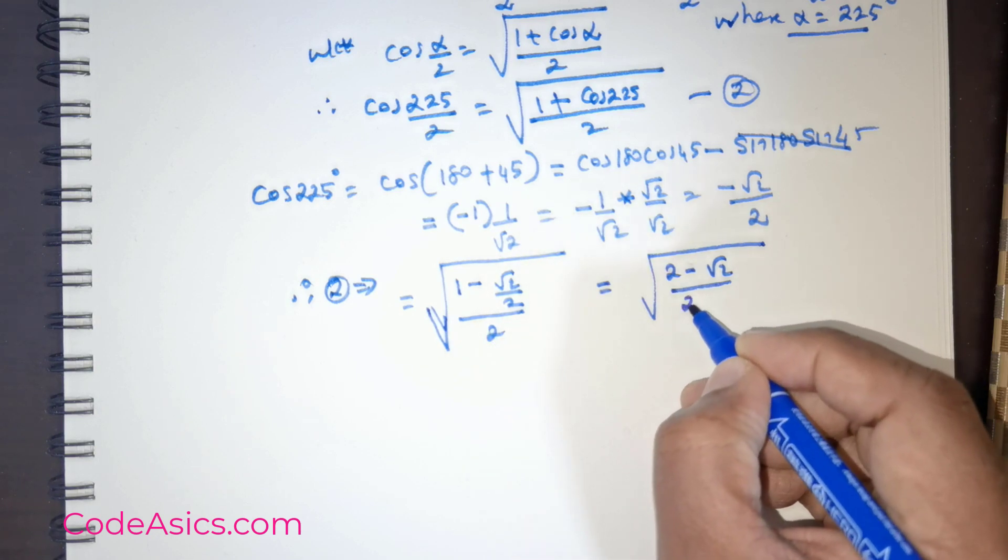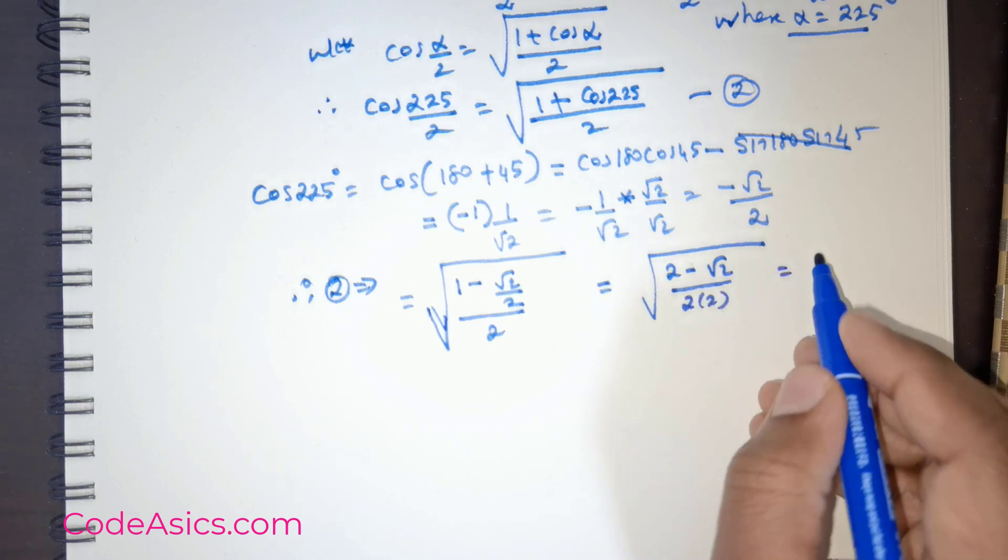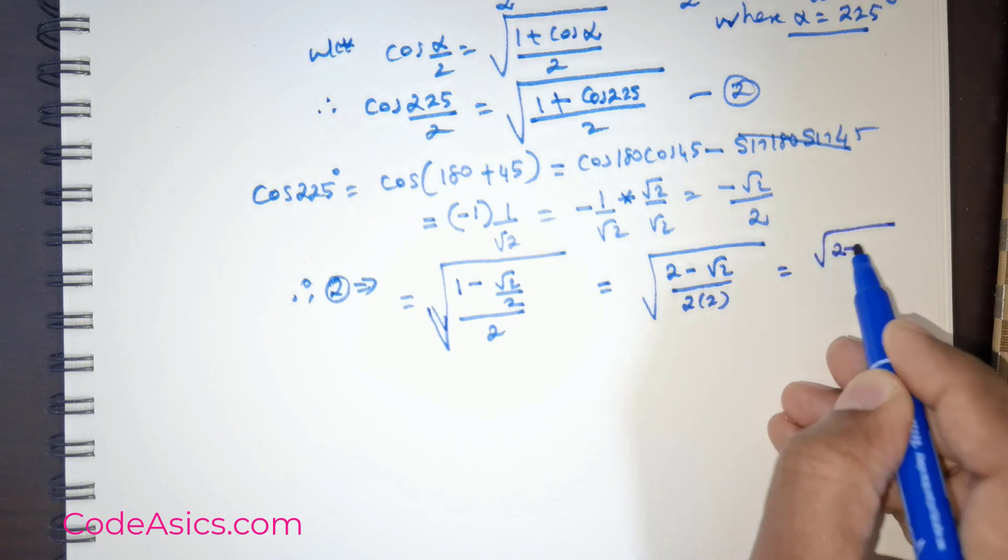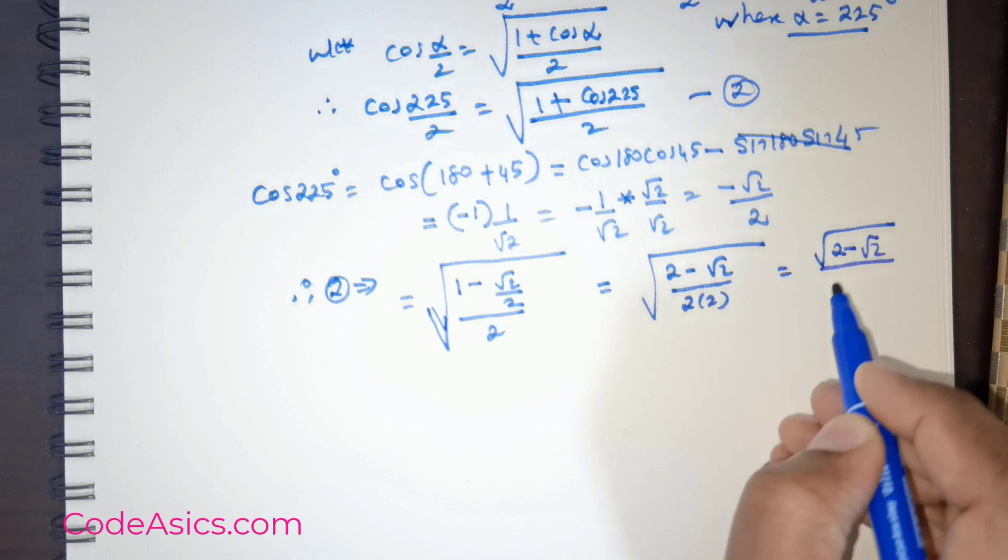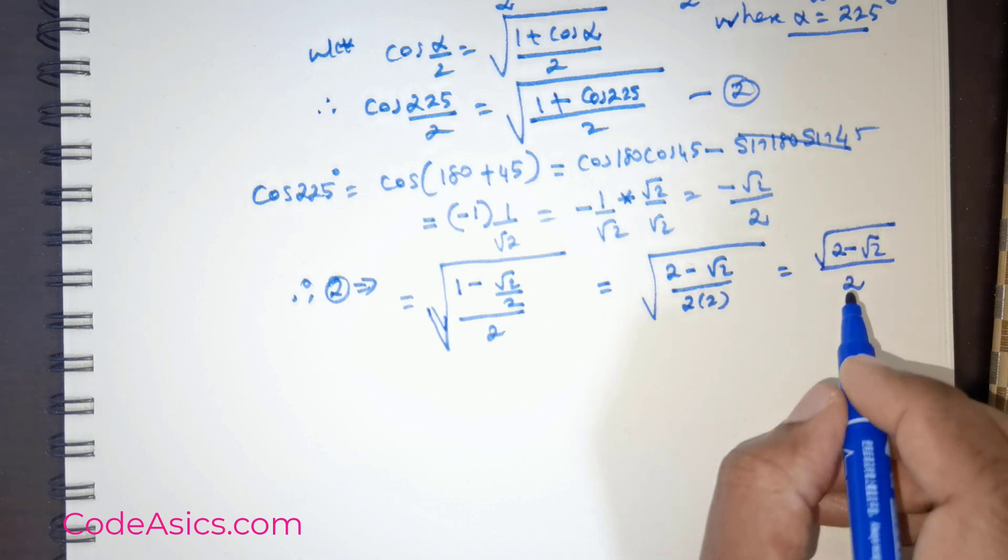That would come to the denominator, giving me 2 times 2 equals 4. But I can rewrite that as square root of 2 minus root 2 divided by 2. So this is what we have got.